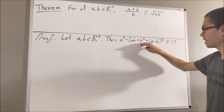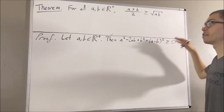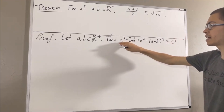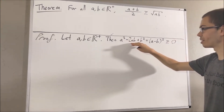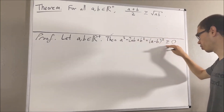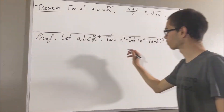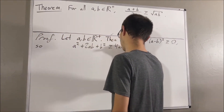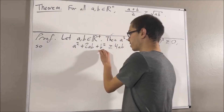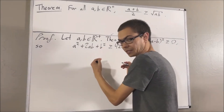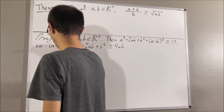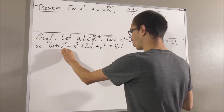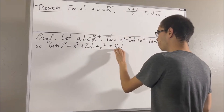Now, if we take this inequality and add 4ab on both sides, we get that a squared plus 2ab plus b squared is greater than or equal to 4ab. And we know that this is equal to a plus b squared. So, this tells us that a plus b squared is greater than or equal to 4ab.